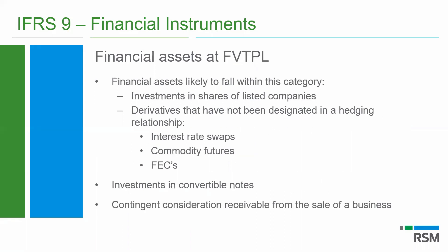The next category is financial assets at fair value through profit and loss — this is quite simple. The most likely assets to fall under this category would be your investments in listed shares, derivatives that are not designated as hedging items (your interest rate swaps, your FECs — FECs being the most common one in South Africa), your investments in convertible bonds, or any contingent consideration receivable from the sale of a business. Those are typically what we would be used to having at fair value through profit and loss, and I don't think it's too difficult to get those fair values.